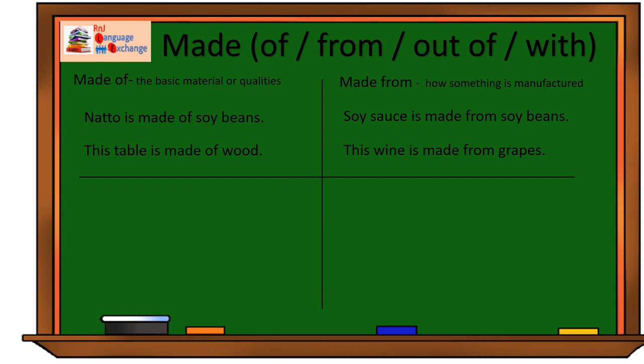How about made from? When do we use it? Well, made from is used when we are talking about how something is manufactured. And from the word how, it means that the material undergoes a change or transforms from its original form.